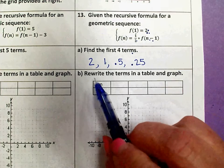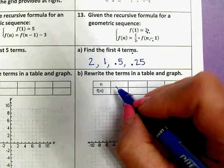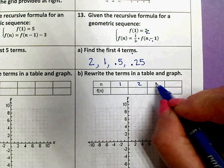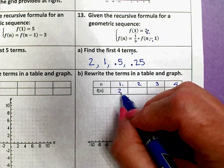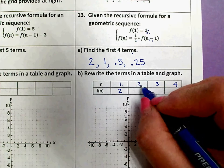So now I need to rewrite these terms in the table. I just found my first four terms. So when x is 1, y is 2. When x is 2, y is 1.